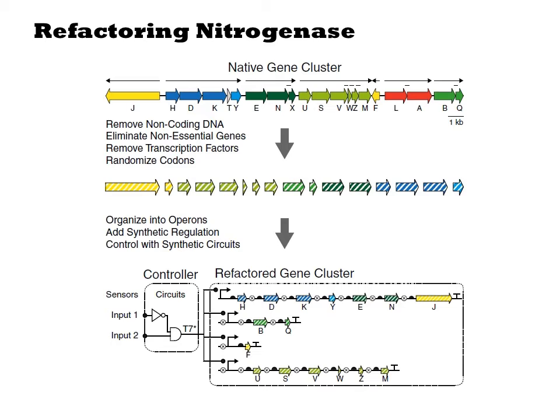In their experiment, the authors start with the wild type sequence, extract out the open reading frames, and then remove unwanted genes. They remove any genes that, through genetics experiments, are known to be non-essential for the function of the cluster. They also remove any regulatory genes such that only the functional components of the cluster remain. They then randomize the codons in these open reading frames and reassemble synthetic operons with synthetic promoters.